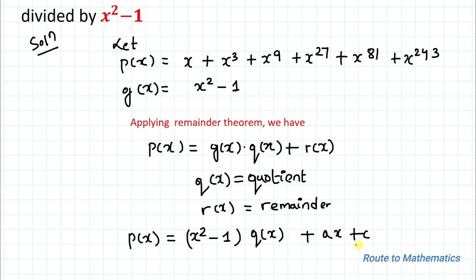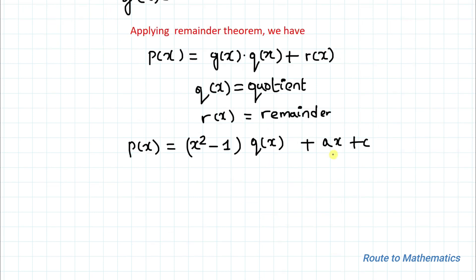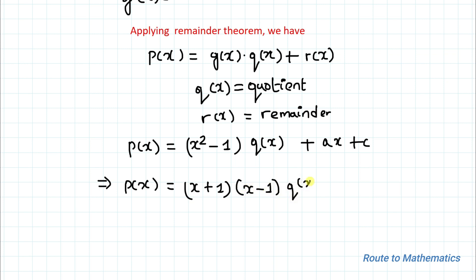We take r(x) as ax + c, because the degree of the remainder must be less than the degree of the divisor. The degree of the divisor is 2, so the degree of the remainder must be at most 1. Applying the algebraic identity a² - b² = (a+1)(a-1), we write p(x) = (x+1)(x-1) · q(x) + ax + c.